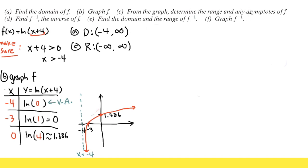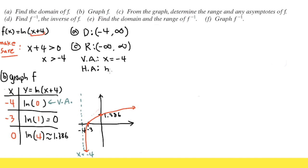You can also write all real numbers — either way is fine. For the asymptotes: the vertical asymptote is x equals negative 4. As for a horizontal asymptote, we have none, because this graph will never be horizontal. So we just put down none.